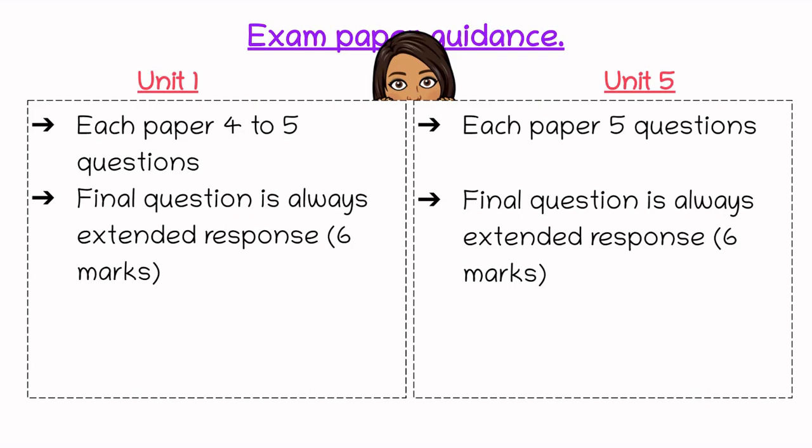I also want to give you some guidance on the exam paper. Unit 1 usually has 4 or 5 questions per paper, and Unit 5 usually has 5 questions per paper. In both units the final question is always an extended response question, which requires you to write a short essay worth around 6 marks. It's worth preparing for this essay when you revise, and it's worth trying to spot any patterns in past papers.